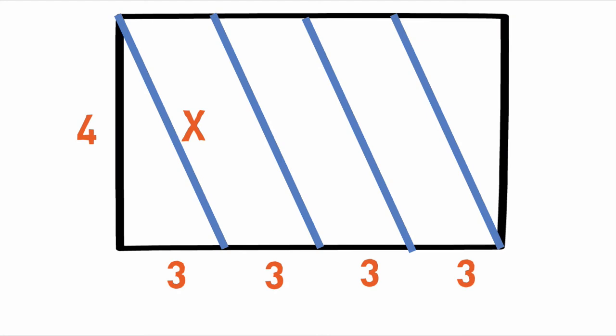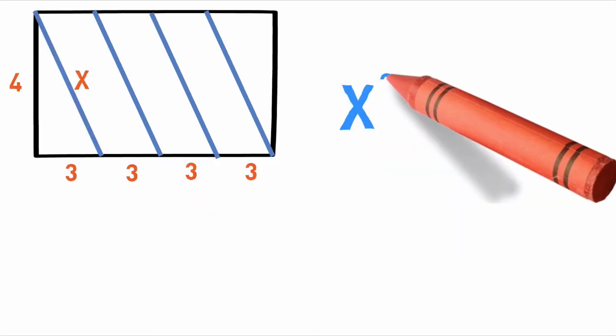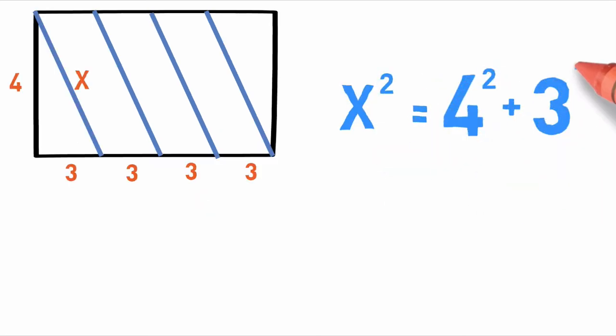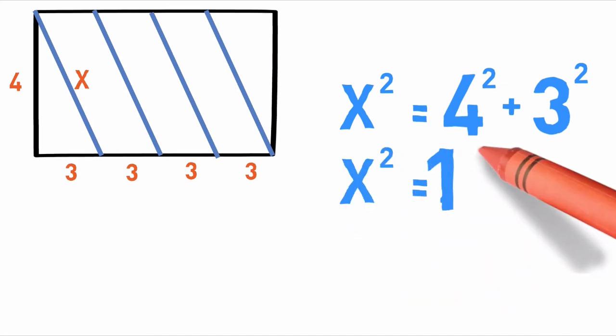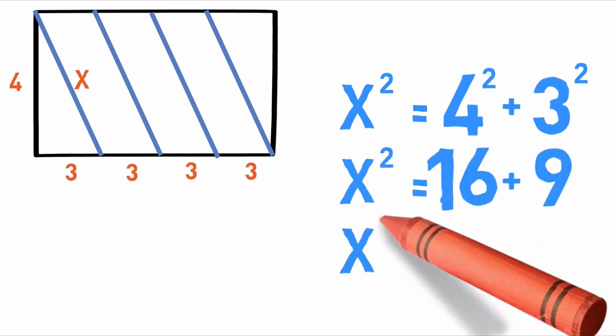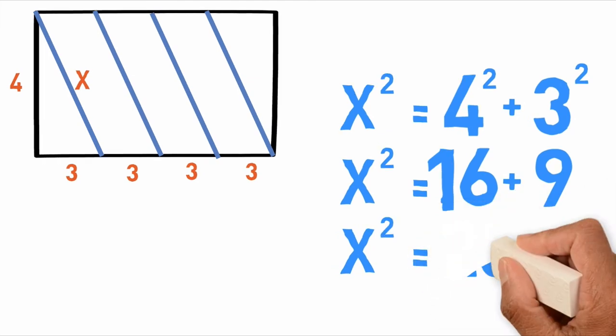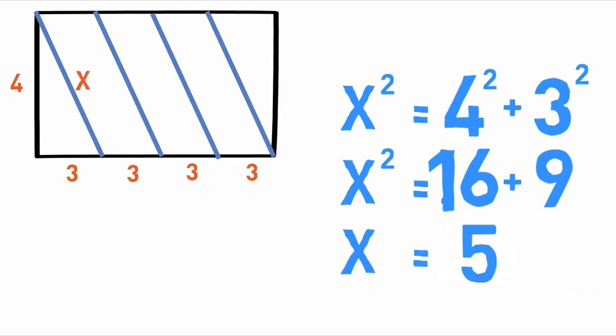So let's use the Pythagorean theorem to get x. We have x squared is equal to 4 squared plus 3 squared, or x squared is equal to 16 plus 9, or x squared is equal to 25, or x is equal to 5.